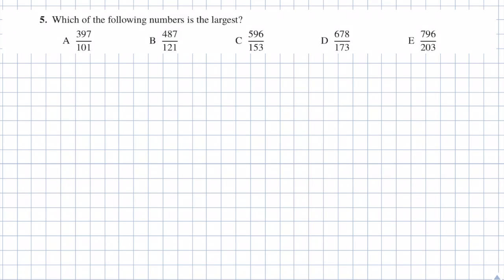Question 5: which of the following numbers is the largest? Answers: A is 397 over 101; B is 487 over 121; C is 596 over 153; D is 678 over 173; and E is 796 over 203. Let's have a look at each answer separately.